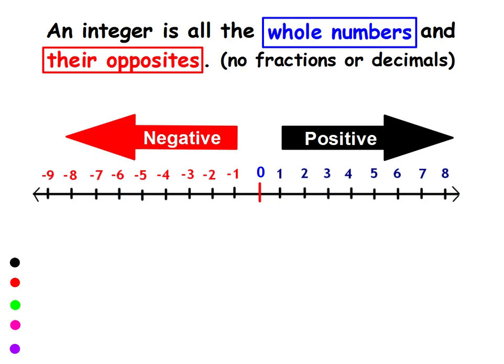Well, look at the number line here. An integer is all of the whole numbers, and these are often called the counting numbers: 1, 2, 3, 4, and it includes 0. So it includes all of the whole numbers and their opposites.